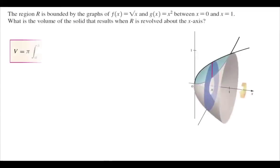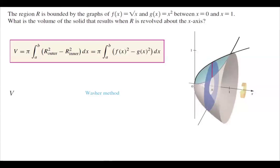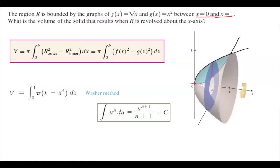Taking the definite integral from 0 to 1 of π(x − x⁴) dx, recall the power rule: the integral of u^n du = u^(n+1)/(n+1) + C. Note this is a power function, not an exponential function — different formulas apply for exponential functions.